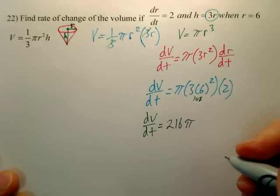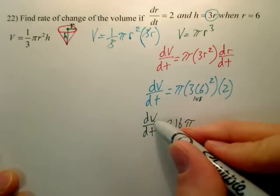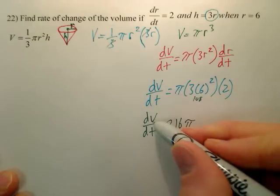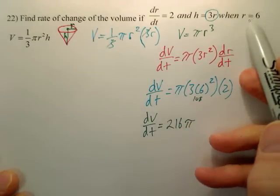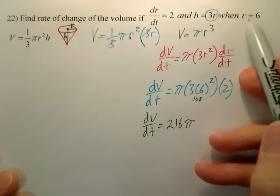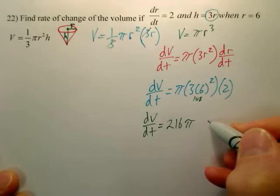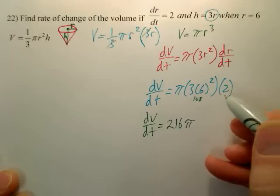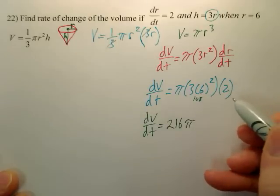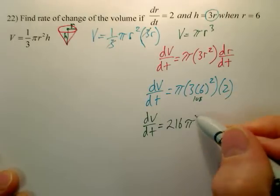Now just for unit purposes, this is volume. Do we have units for a radius? No. So we can't do the units, can we? Now if my radius was say centimeters, this would be cubic centimeters. And if my time was seconds, it would be cubic centimeters per second. I don't have any units, so I can't tell it.